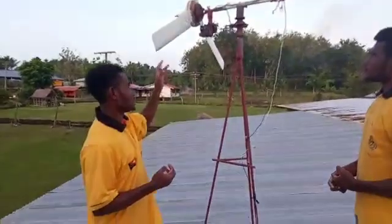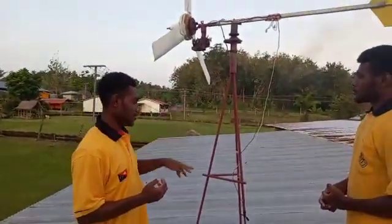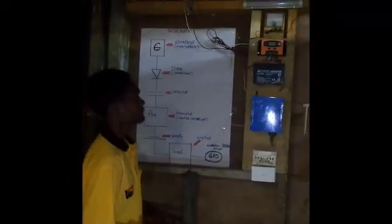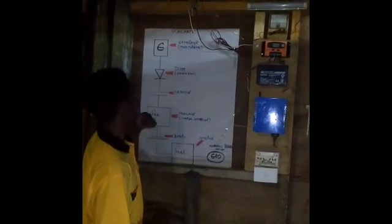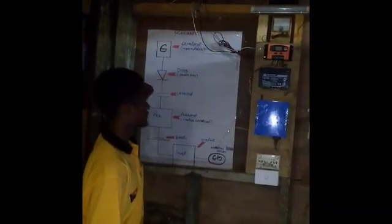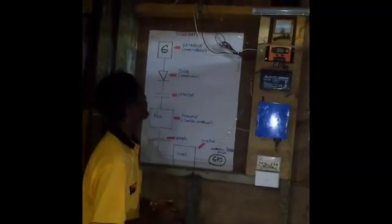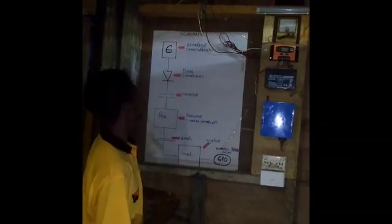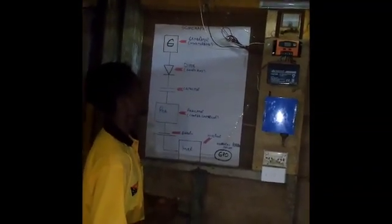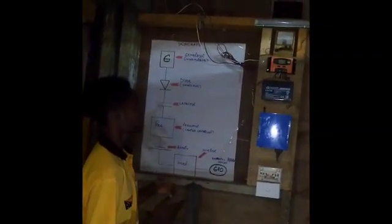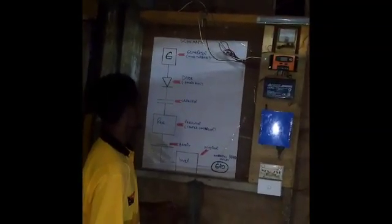The electricity then travels through the wire and down into the circuit board. From the generator, the current flows through to the diode. The diode prevents the electrons from going in the reverse direction and directs them through the circuit to the controller.